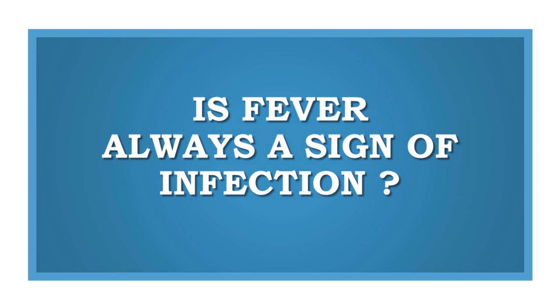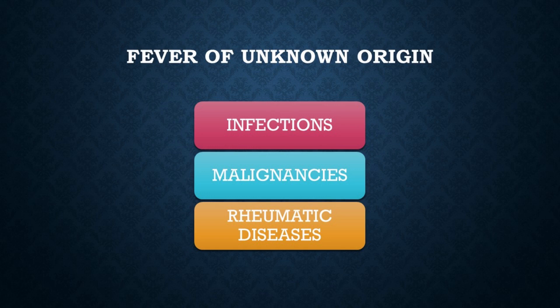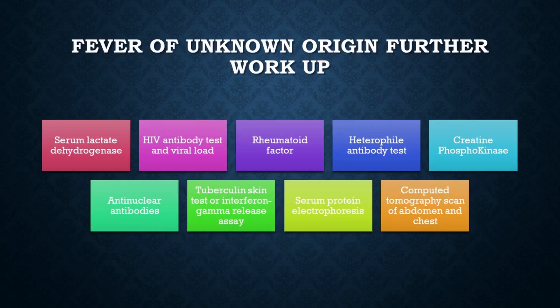Not all fever is due to infections. There is the term fever of unknown origin, defined as fever higher than 38.3°C on several occasions, lasting for at least two to three weeks without an established etiology despite intensive evaluation and diagnostic testing. The three general categories that can cause fever of unknown origin, as shown on this slide, are infections, malignancies, and rheumatic diseases.